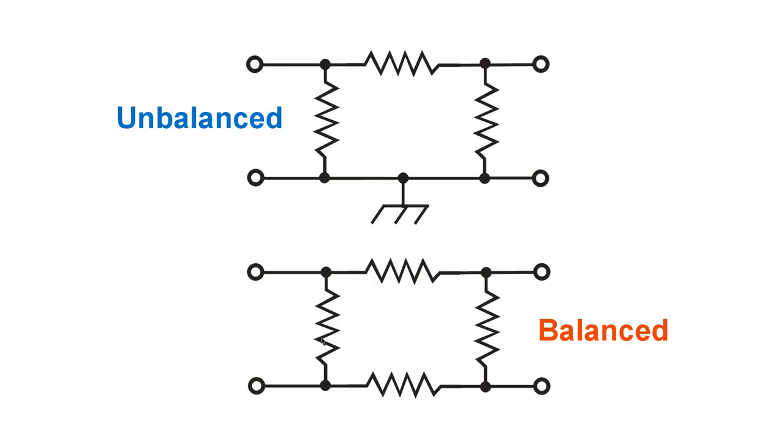Attenuators do not perform properly when the input or output or any of the resistors contain reactance. With resistors, for example, you would not want to use wire wound resistors. And finding a high powered carbon composition resistor can be a difficult task.